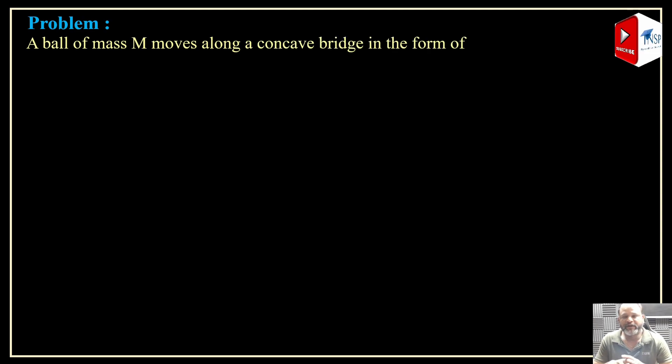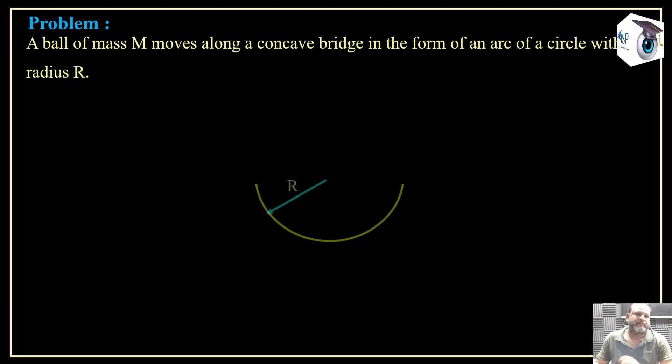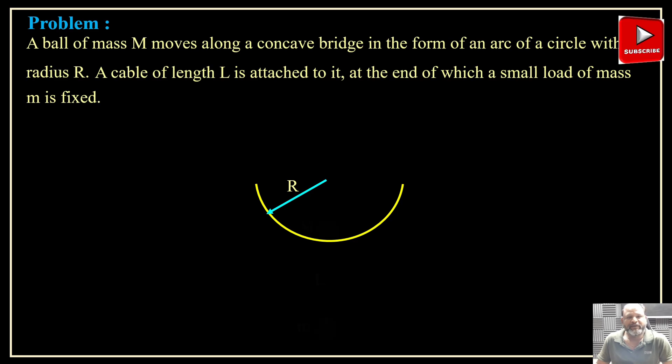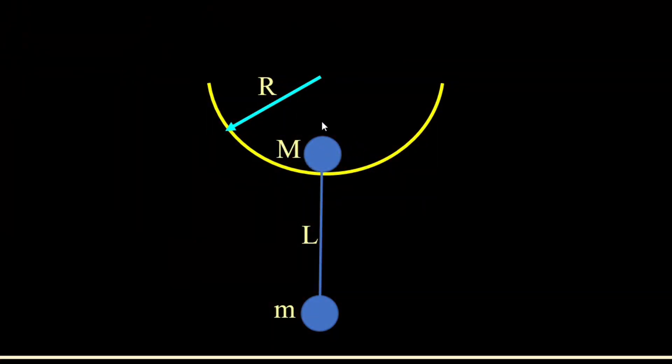A ball of mass M moves along a concave bridge in the form of an arc of a circle of radius R. You can see here there is a bridge in the form of a circle of radius R. A cable of length L is attached to it, at the end of which a small load of mass m is fixed. So this is the ball of mass M, and here is the cable or string connected to it, and this is another mass of small m which is called the load.